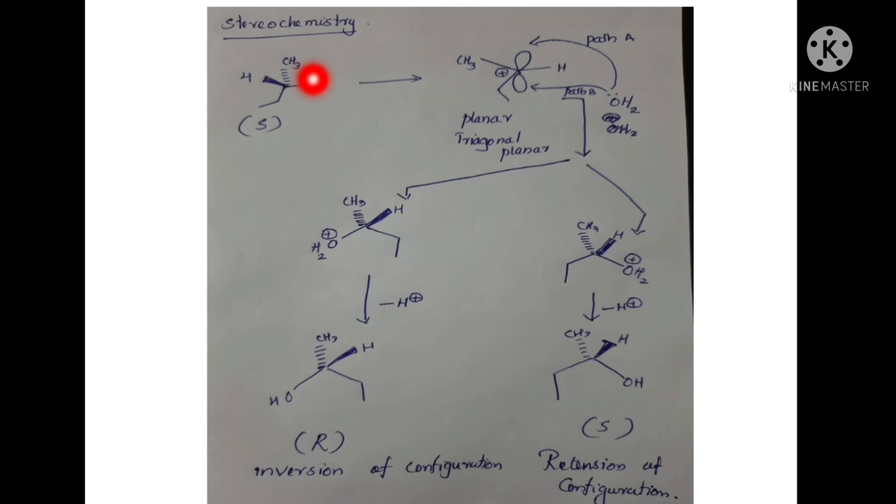When a carbocation forms, it is planar with a P orbital perpendicular to the plane. The incoming nucleophile has two possibilities: the upper portion might attack the P orbital, and the lower portion might attack the P orbital.